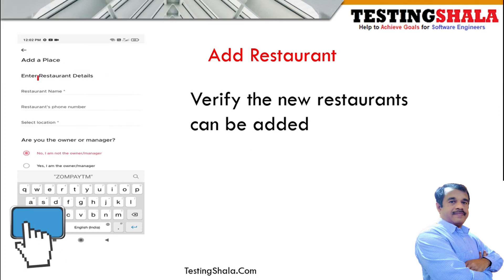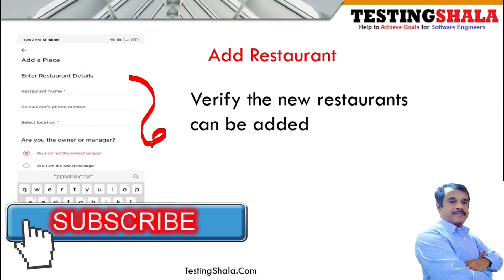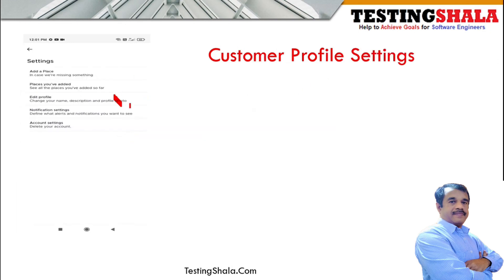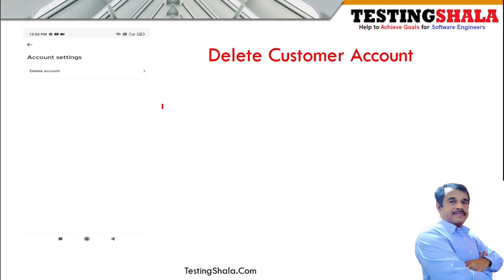There is also a mechanism in the app to add a restaurant, with fields for restaurant name, phone number, and manager status. We should test these fields in different combinations. We should also be able to edit the customer profile, change notification settings for mobile number or email, and there is a mechanism to delete the account.